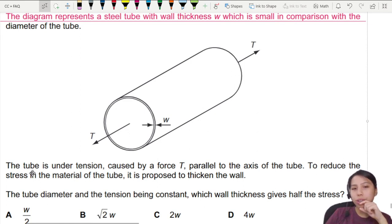To reduce the stress though, it is proposed that we thicken the wall. Nice suggestion. The tube diameter and the tension being constant, which wall thickness will make the stress half?